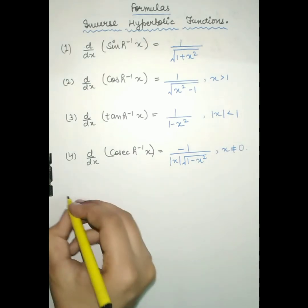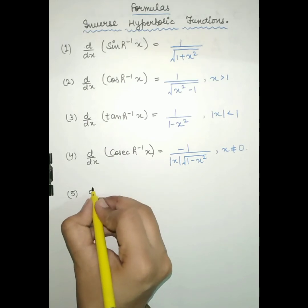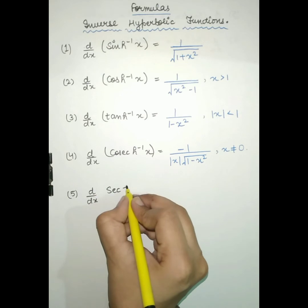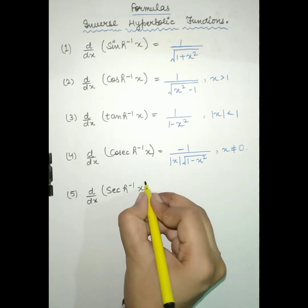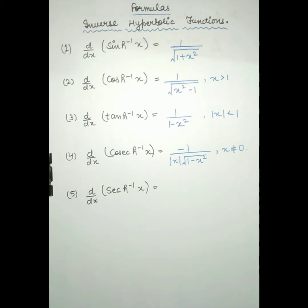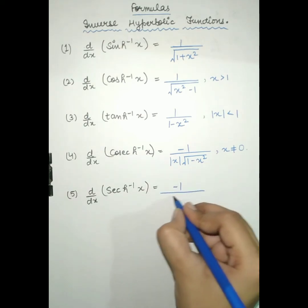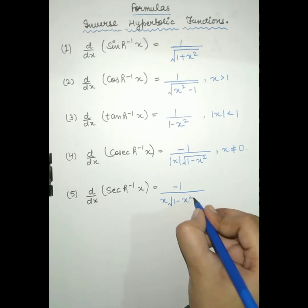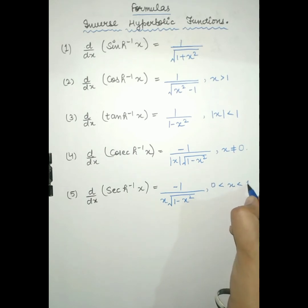Fifth is the derivative of secant hyperbolic inverse x, which will be equal to minus 1 upon x into root of 1 minus x square, where x is not equal to 0.